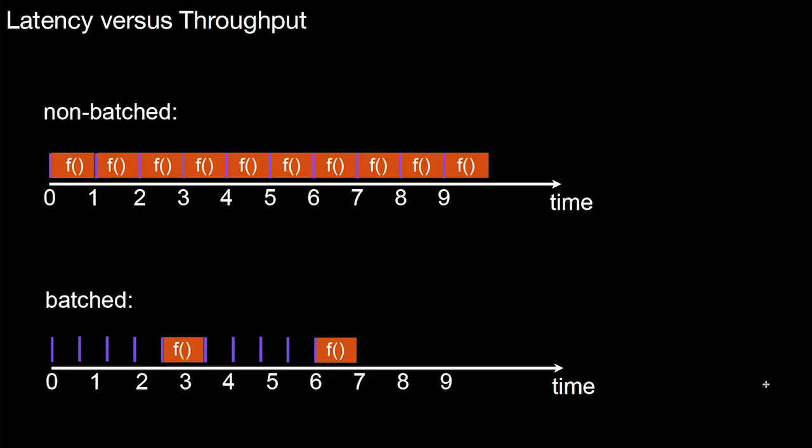So here's an example of this optimization trade-off you have to keep in mind. Let's first assume there's a non-batched calling of that function F. So assume this is a data item that's being used as a parameter for function F. Those are seconds or milliseconds or microseconds, whatever. This is just some time unit.